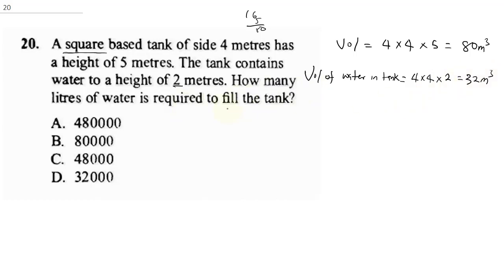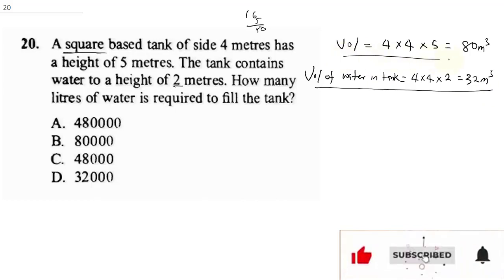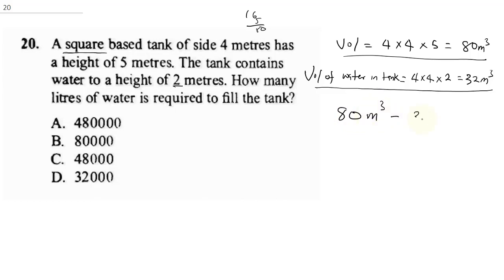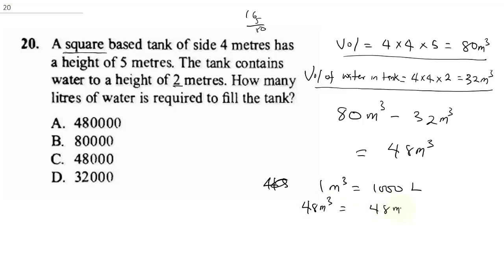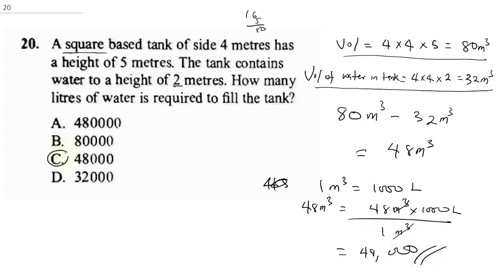To find how many liters are required to fill the tank: water needed equals total capacity minus current water volume, which is 80 minus 32 equals 48 cubic meters. Since 1 cubic meter equals 1,000 liters, 48 cubic meters equals 48,000 liters. The correct answer is C.